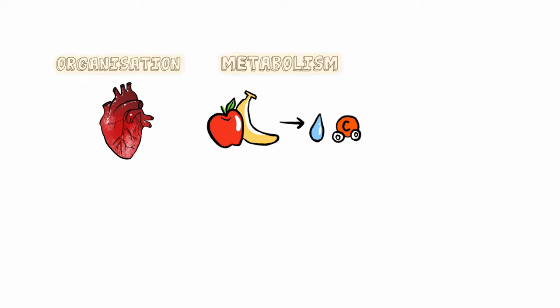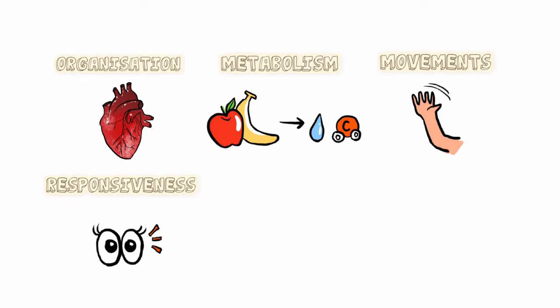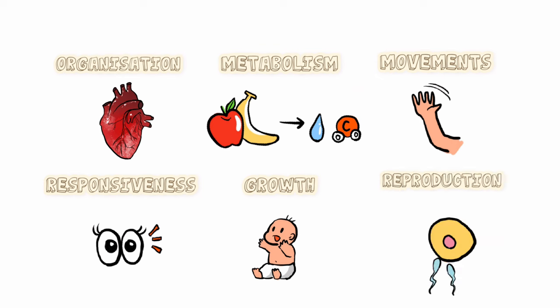The cardiovascular system comes under one out of six broad life processes: organization, metabolism, movements, responsiveness, growth, and reproduction.